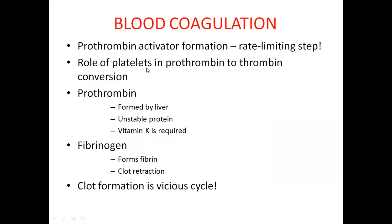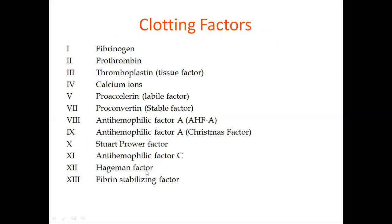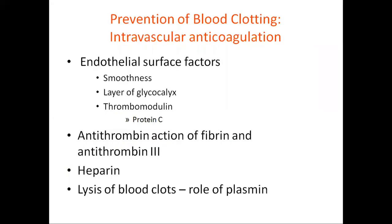Prothrombin activator formation is the rate-limiting step. Platelets have a role in the conversion of prothrombin to thrombin, and prothrombin is synthesized in the liver. Vitamin K is required for prothrombin activation. Fibrinogen forms fibrin and plays a role in clot retraction. Clot formation is a vicious cycle — a cycle caused by positive feedback that can sometimes lead to death. Clotting factors 2, 7, 9, and 10 are the vitamin K-dependent factors and their source is intestinal flora.